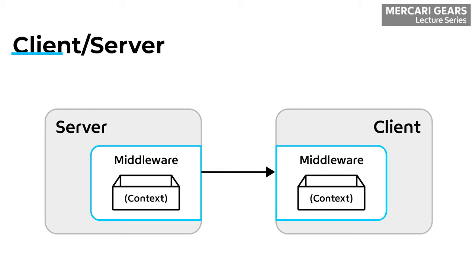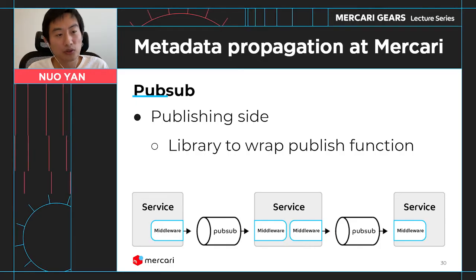In our infrastructure, the majority of our services are written in Golang. In our case, the internal metadata store, which is in-memory, uses the context object. And if the service needs to send requests to other services, we propagate the metadata by using client middleware that reads the metadata from the internal metadata store, transforms it, and restores it to the request headers, sending the request out with the metadata to the other services.